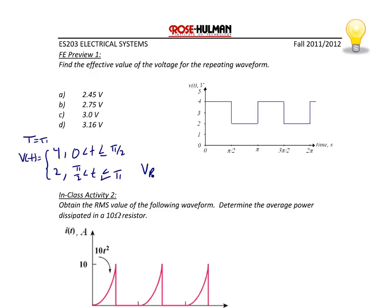So v_RMS squared would be equal to 1 over π, the integral from 0 to π over 2 of 16 dt, plus 1 over π, the integral from π over 2 to π of 4 dt. So v_RMS squared is equal to 10, and v_RMS is equal to the square root of 10, or 3.16 volts. So the answer is letter D.